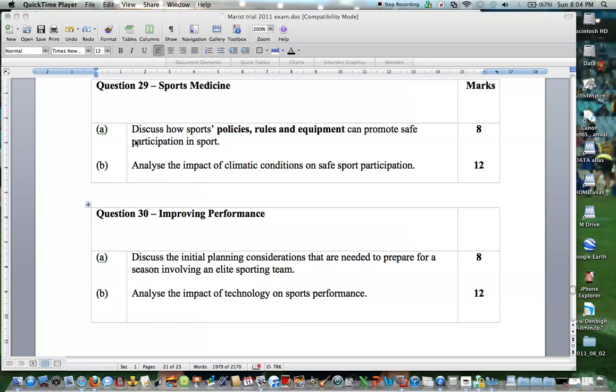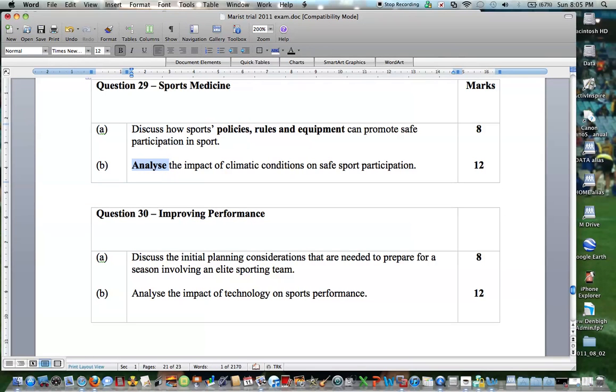Question 29 from Sports Medicine. So question 29B this time, it's asked students to analyze the impact of climatic conditions on safe sport participation, and it's worth 12 marks. Obviously, analyze being the key term, the impact of climatic conditions. And like our previous question, must be related to safe sports participation. So analyze the impact of climatic conditions on safe sport participation for 12 marks.